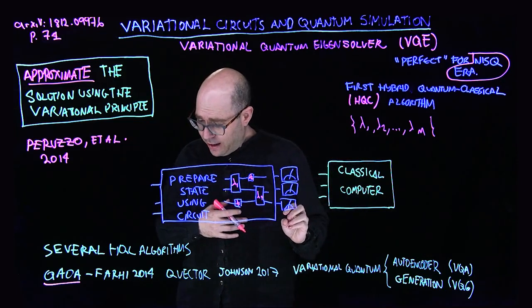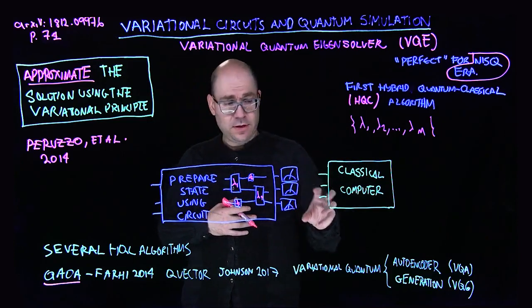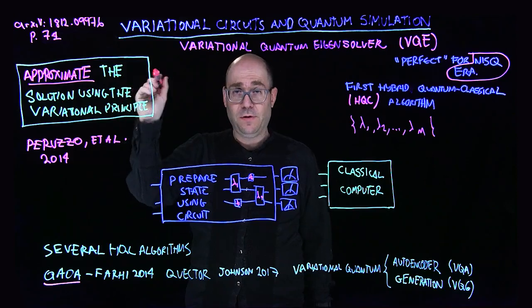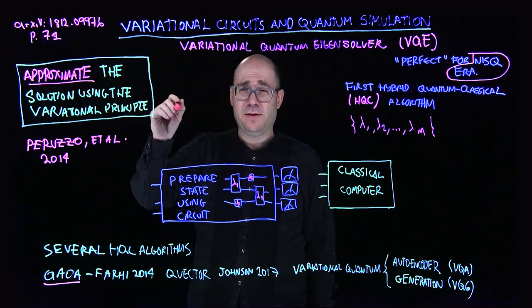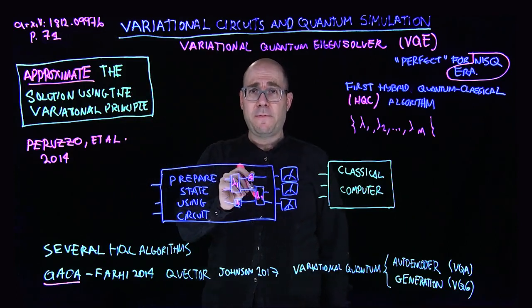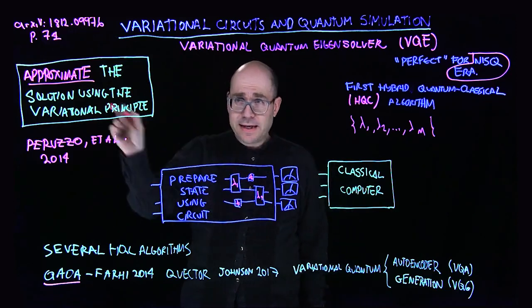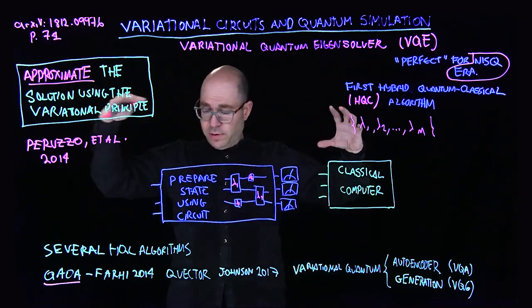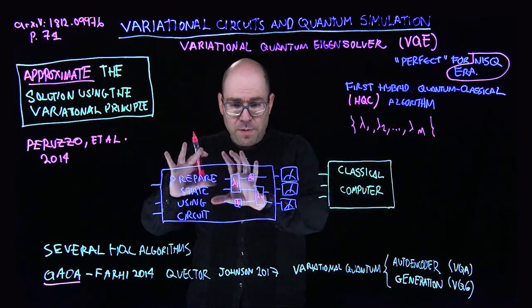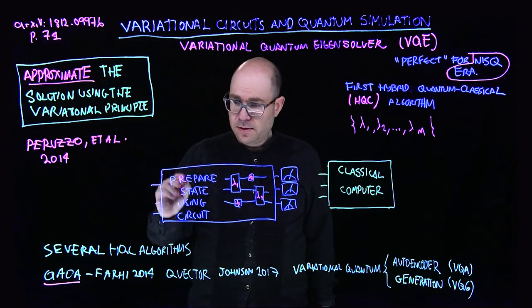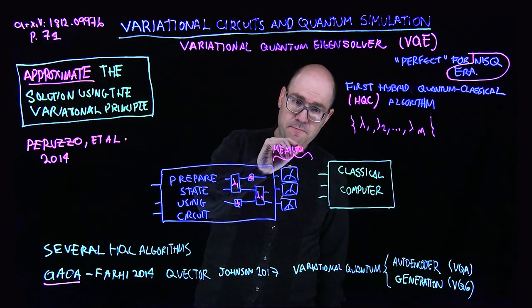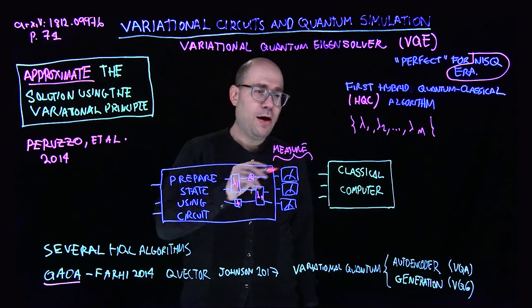And then figure out what is the energy of that Hamiltonian. And then I use the variational principle, which I will describe in the next slide in more detail, to actually change the parameters in such a way that the energy of the Hamiltonian is lower. Again, we're going to the mathematical details of the variational principle. But at the moment, I wanted to give you the big picture of how all these hybrid quantum classical algorithms work. You prepare a quantum state. That's the first phase. Then you measure.